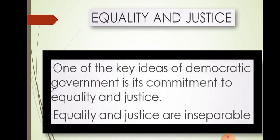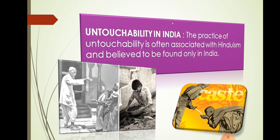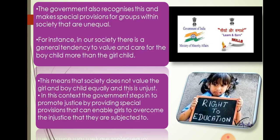Equality and Justice. One of the key ideas of a democratic government is its commitment to equality and justice. Equality and justice are inseparable. The practice of untouchability in India is often associated with Hinduism and believed to be found only in India. The government also recognizes inequality and makes special provisions for groups within society that are unequal. For instance, in our society, there is a general tendency to value and care for a boy child more than a girl child. This means that society does not value the girl and boy child equally, and this is unjust. In this context, the government steps in to promote justice by providing special provisions that can enable girls to overcome the injustice that they are subjected to.